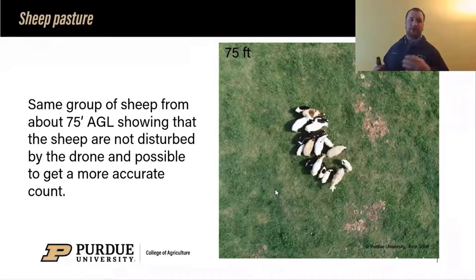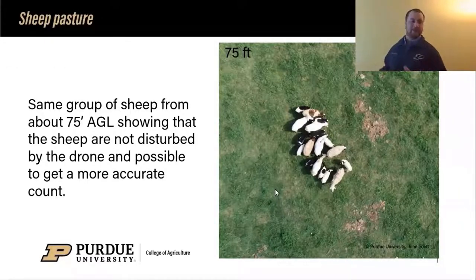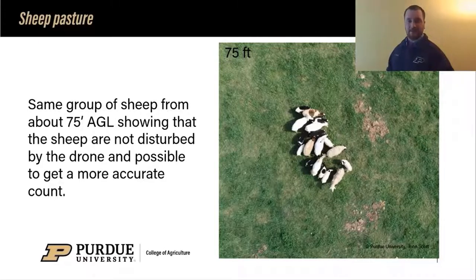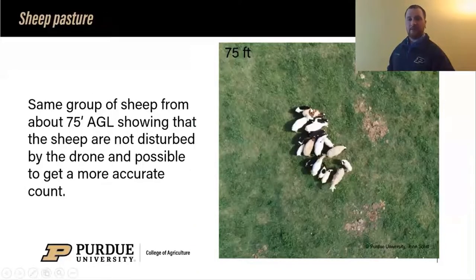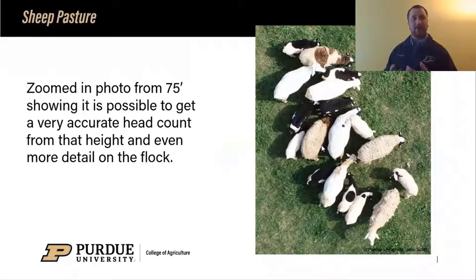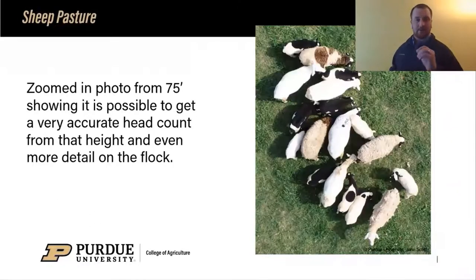At 75 feet you can see the sheep are not disturbed in any way by the drone. One common concern people raise is whether the buzzing will cause animals to start running — especially with cattle. But with sheep, for the most part they just ignore the noise of the UAV. From this height we can see more color detail, and we go ahead and do another digital zoom — again not mechanical, just post-production — so the resolution in the zoomed image is the same as the original.